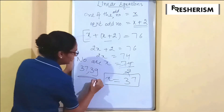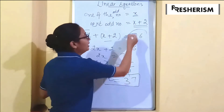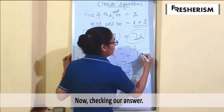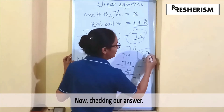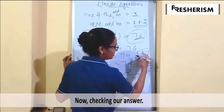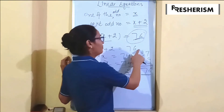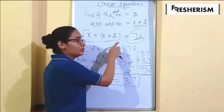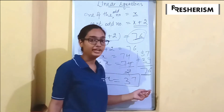So our two consecutive odd numbers are 37 and 39, whose sum is equal to 76. We can verify that: 37 plus 39 equals 76. Yes, the sum is equal to 76. This is how we verify it by putting the value of x back into the linear equation we formed.